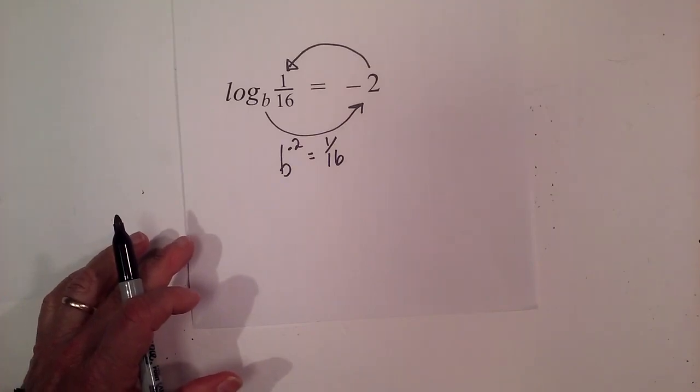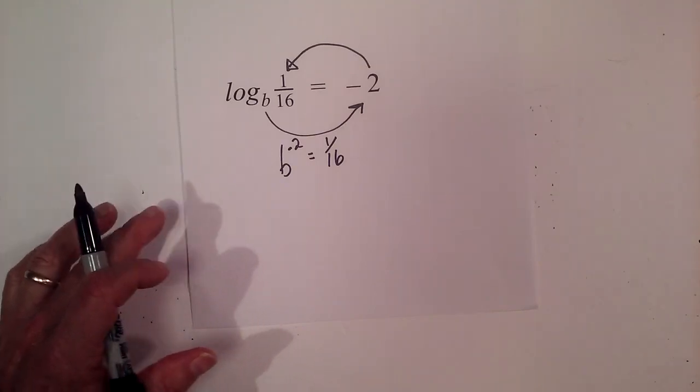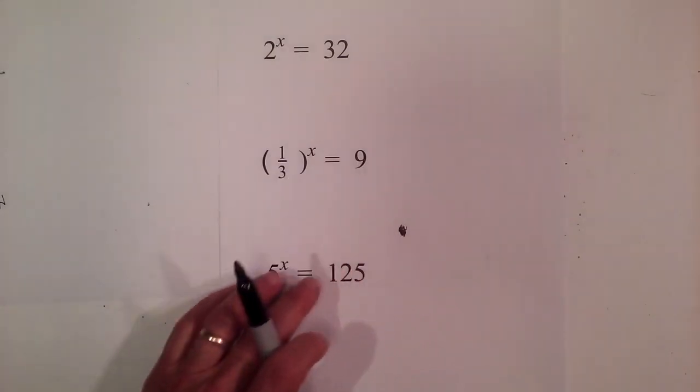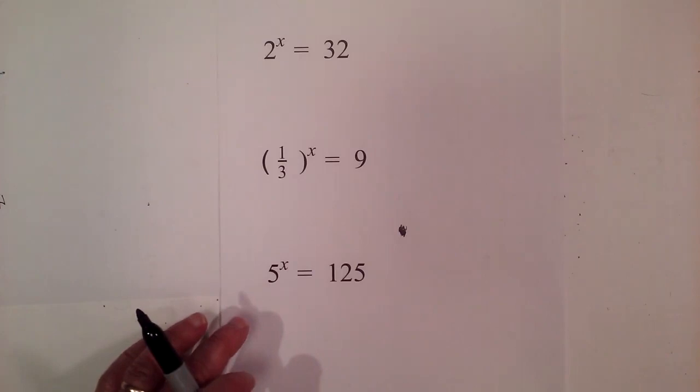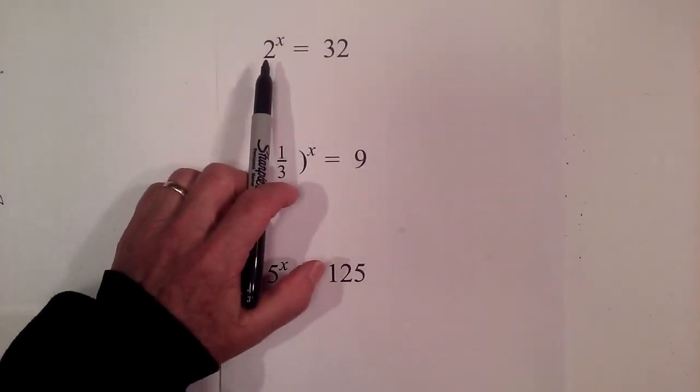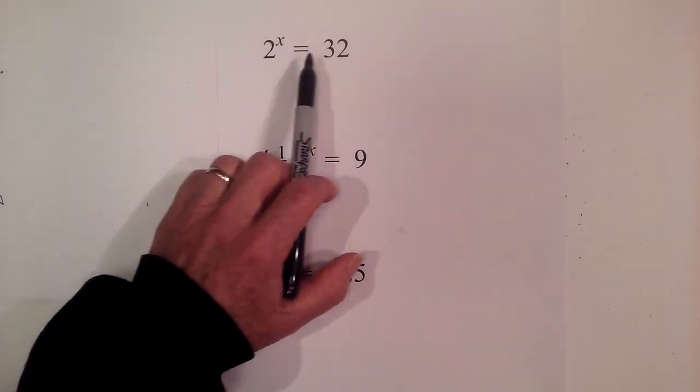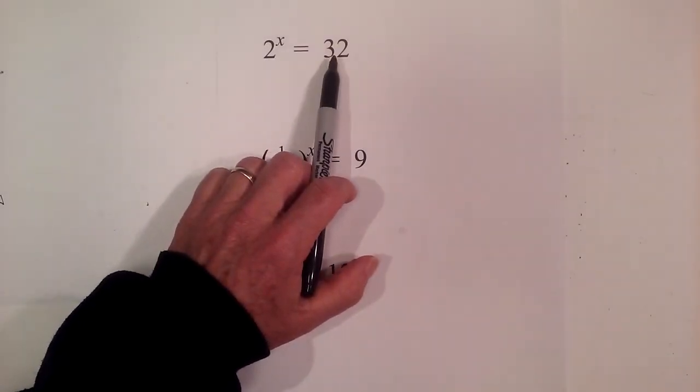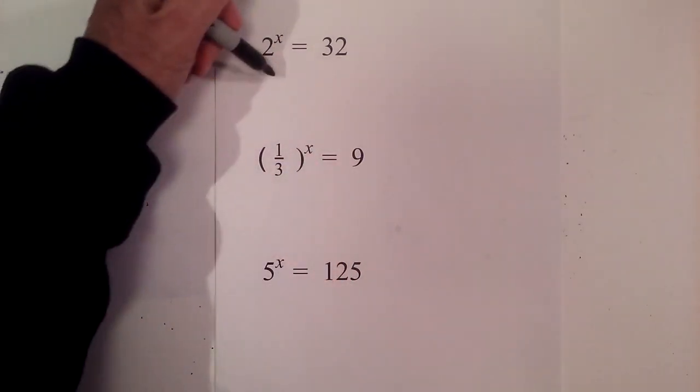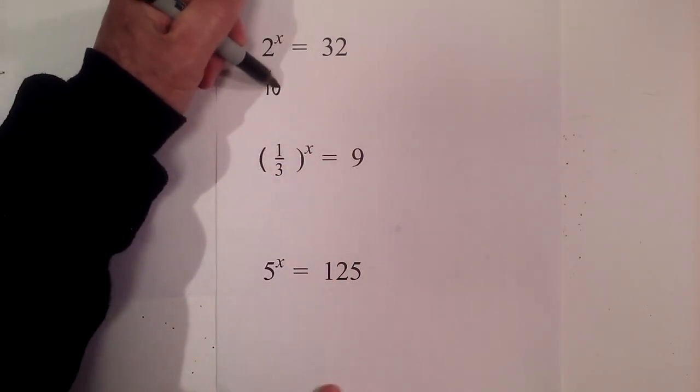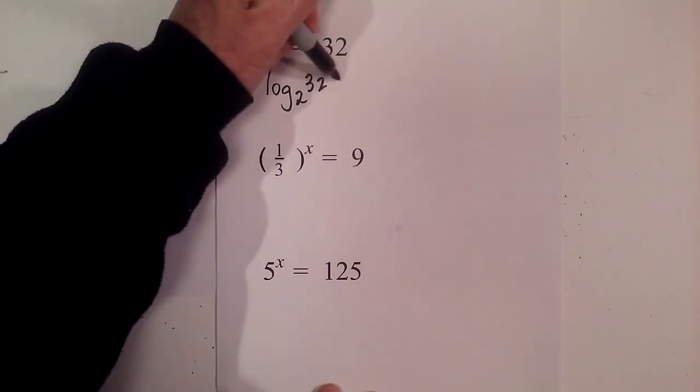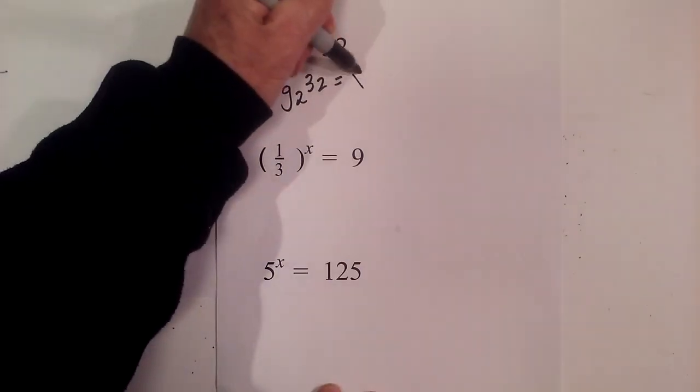Now let's start focusing on moving from exponential form to logarithmic form. Let's get started with that. In this one we have 2^x = 32, so log base 2 of 32 equals the exponent. I'll rewrite this: log base 2 of 32 is always equal to the exponent, which is x.